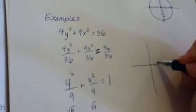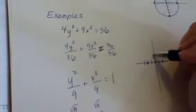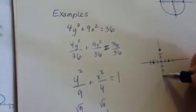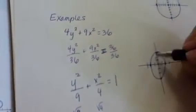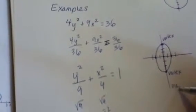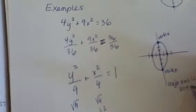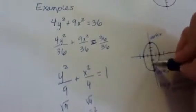So what ends up happening with this problem: since we're going to go 2 in the x direction and 3 in the y direction, our ellipse is more vertically oriented. This means this is now the vertex, and this is a vertex. The major axis is going vertically.